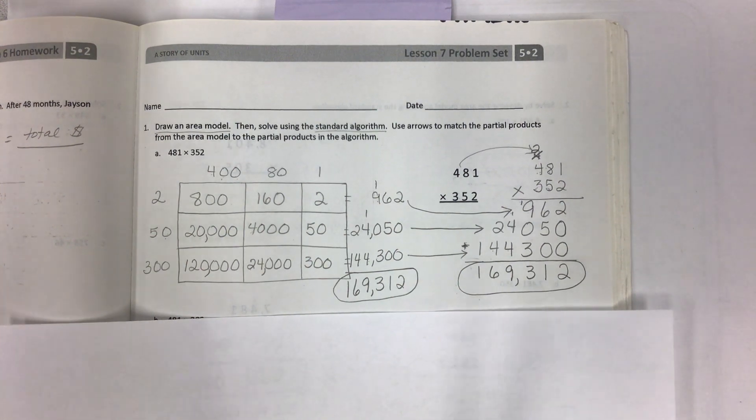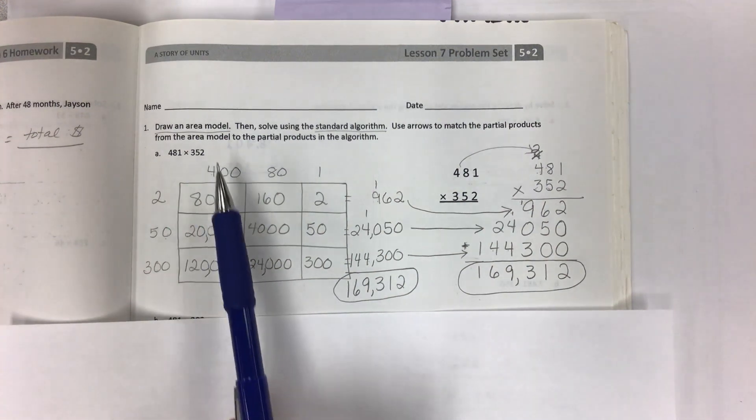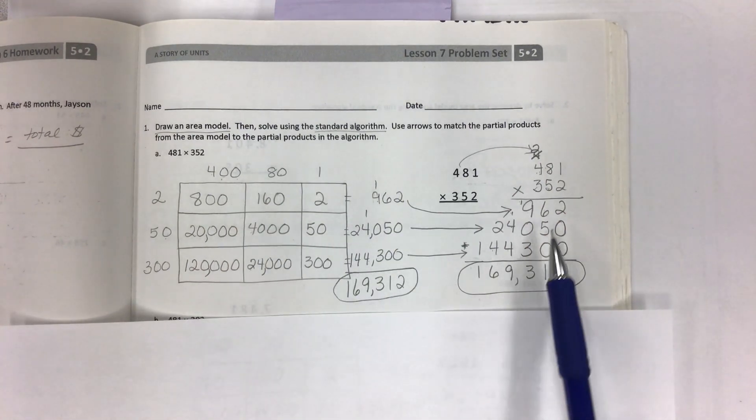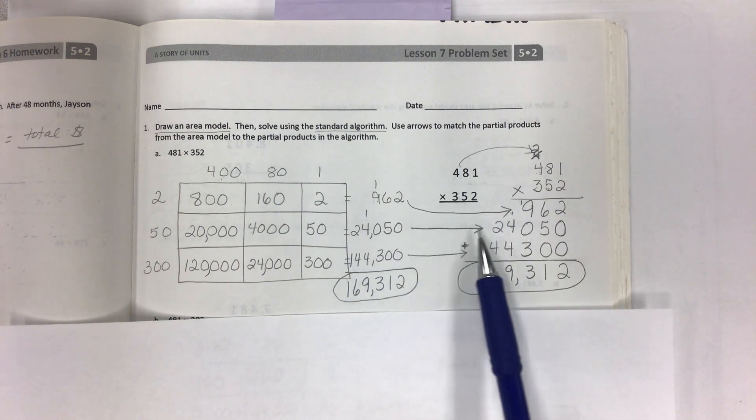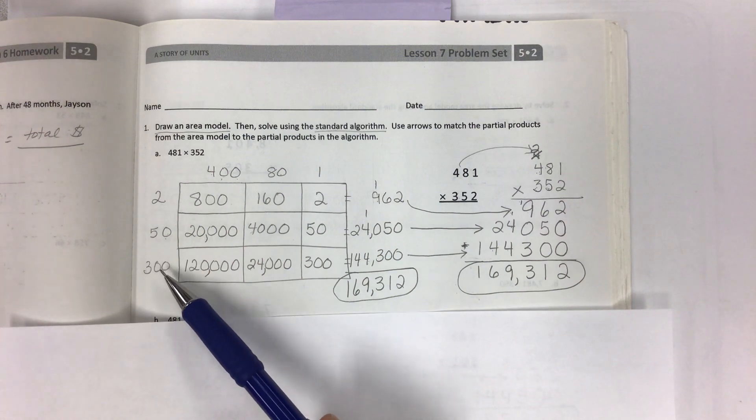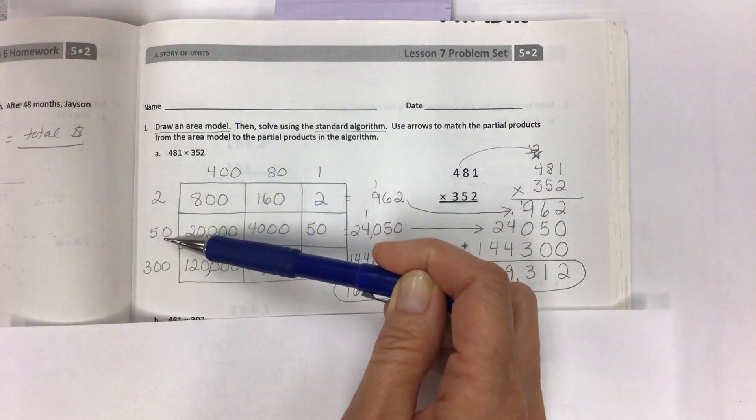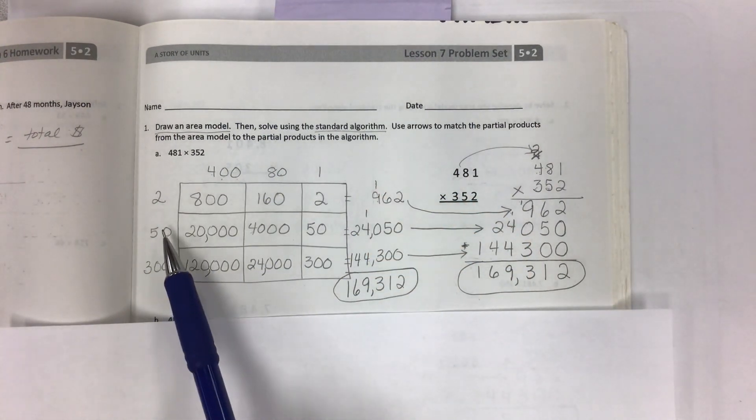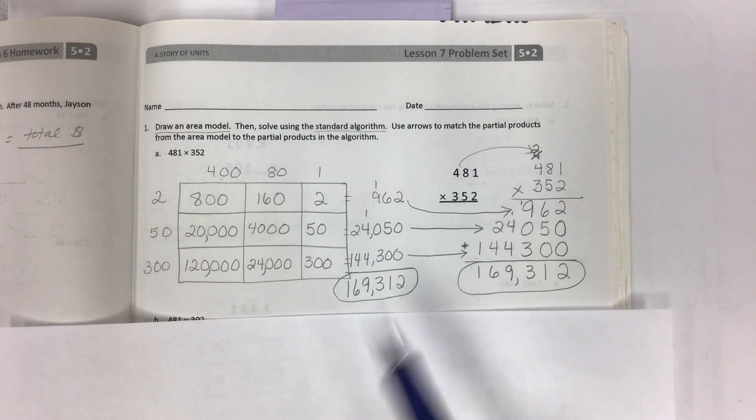So your job in problem set for lesson 7 is to draw an area model then solve using the standard algorithm. So we're connecting this area model to the standard algorithm and you should have your partial products again going straight across and you should be able to connect them. If you don't set it up with 352 in this order with the ones then tens then hundreds going down, or as you might think the hundreds then the tens then the ones going up, you will not get the partial products in the right order. Why? Because you are always starting in the standard algorithm with the ones place.